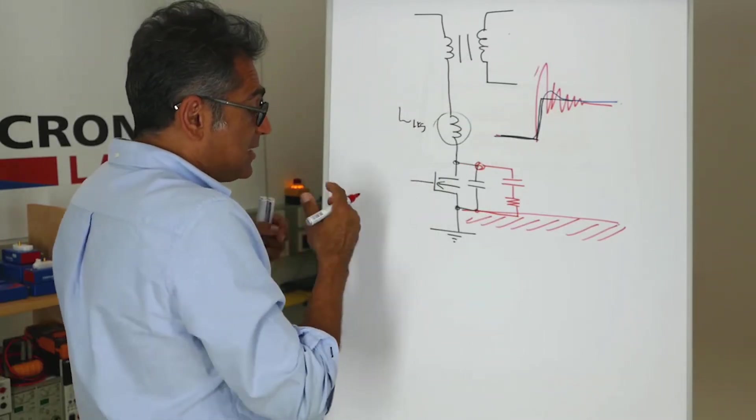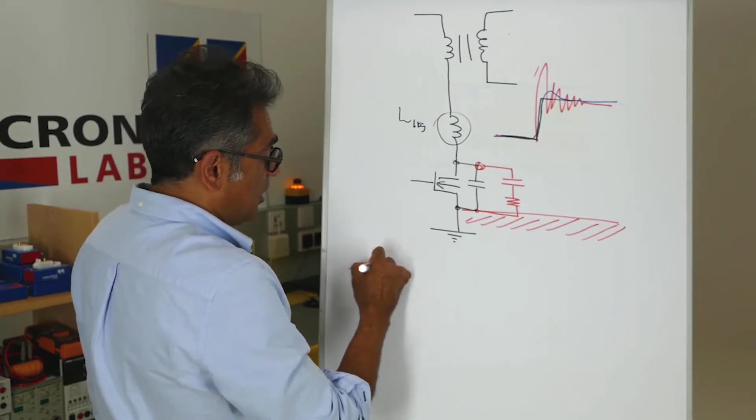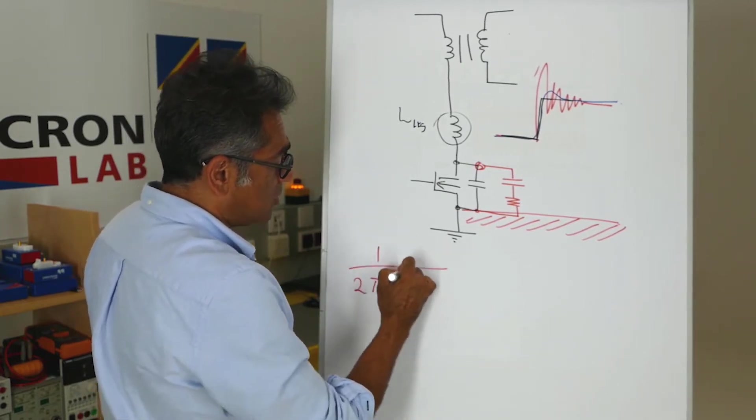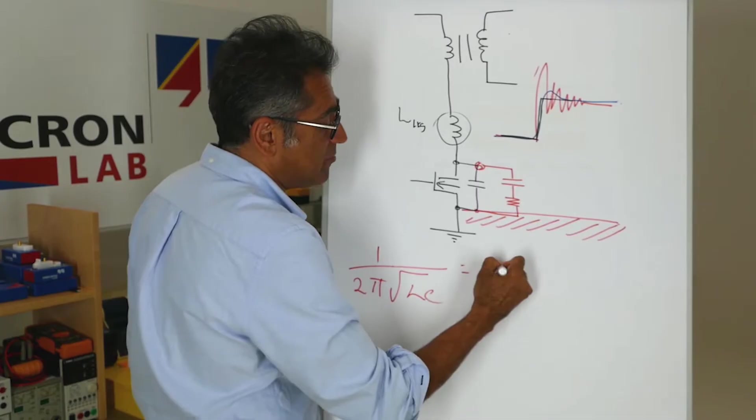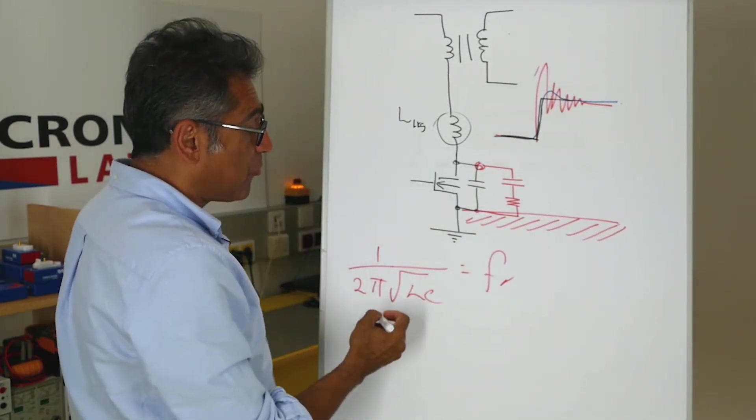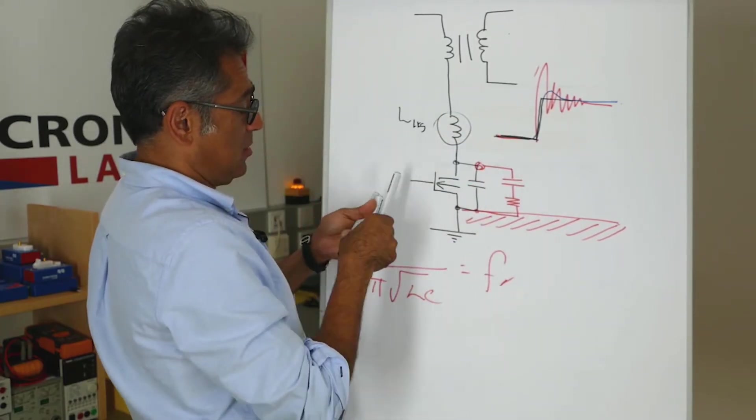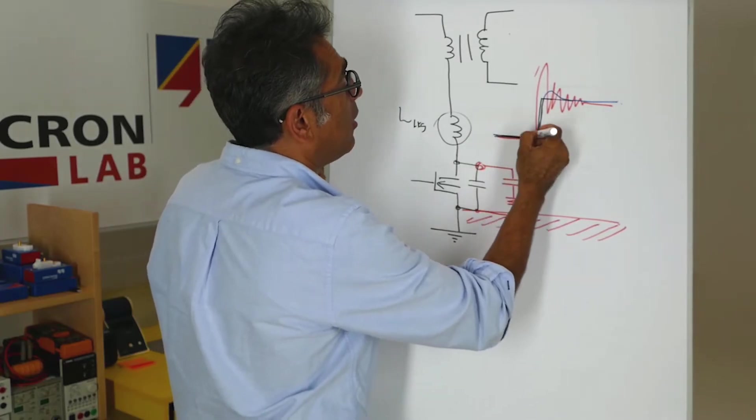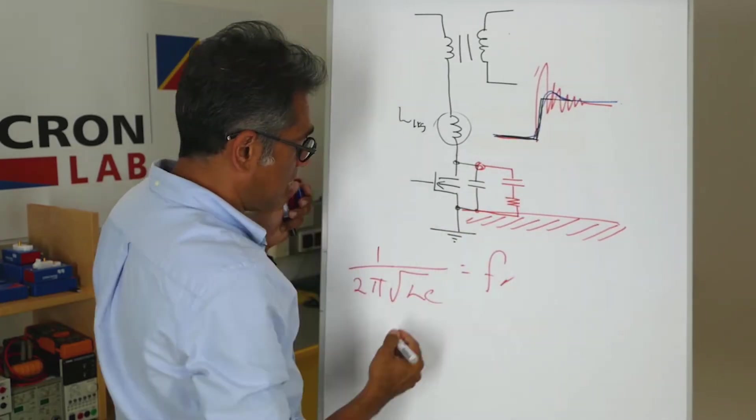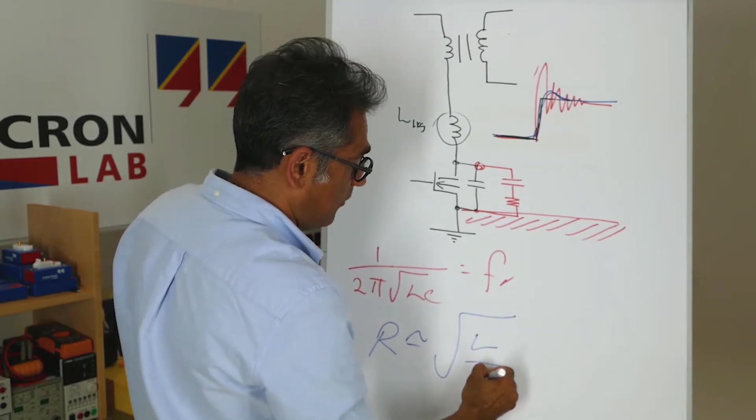Now, this is an iterative process. The equations that we use is typically 1 over 2π times the square root of LC. That is the resonant frequency of this ring. And for a Q of 1, so that you get this blue curve there, we typically use R is the square root of L over C.